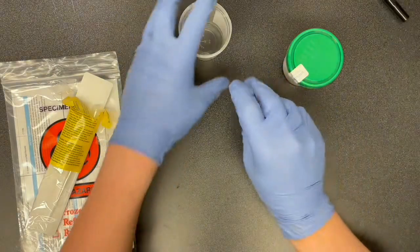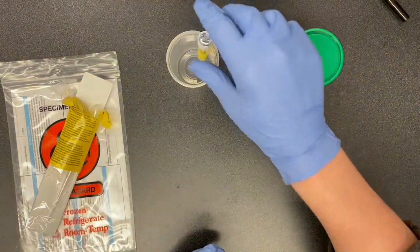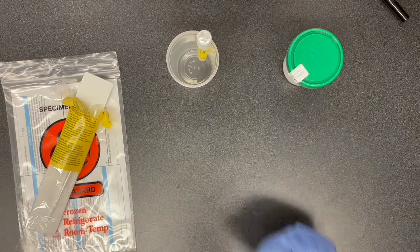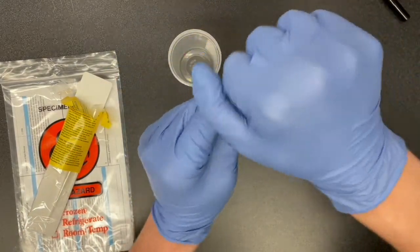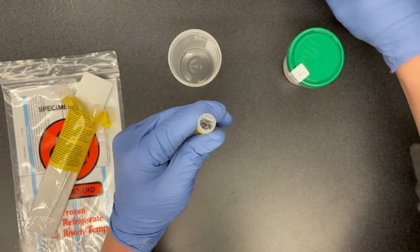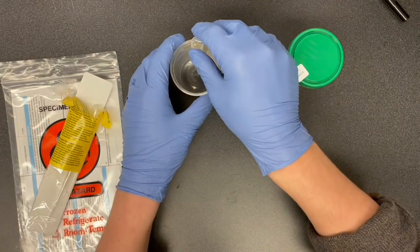Now, it can be useful to have another cup like this to stick the test tube in so that when we open it, it doesn't fall over. So first, we're just going to unscrew the cap, stick it in a cup like so.